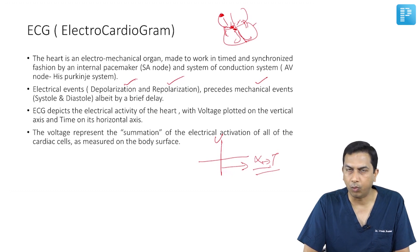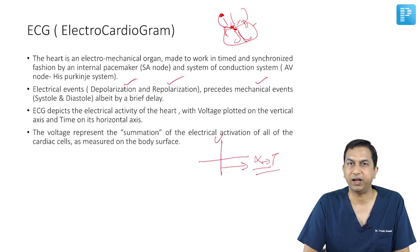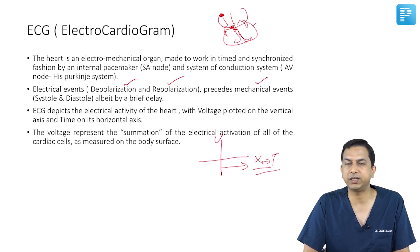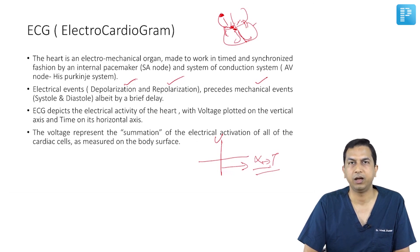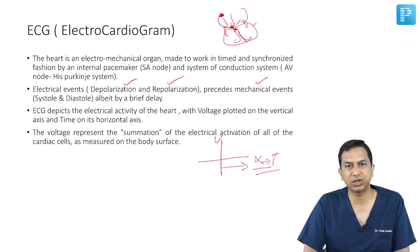The ECG represents the net voltage generated within the heart that reaches the body surface. However, the voltage recorded on the surface is much less — just about 10 percent of what is generated within the heart — due to various transmission factors that reduce the electrical signal during its translation to the body surface.